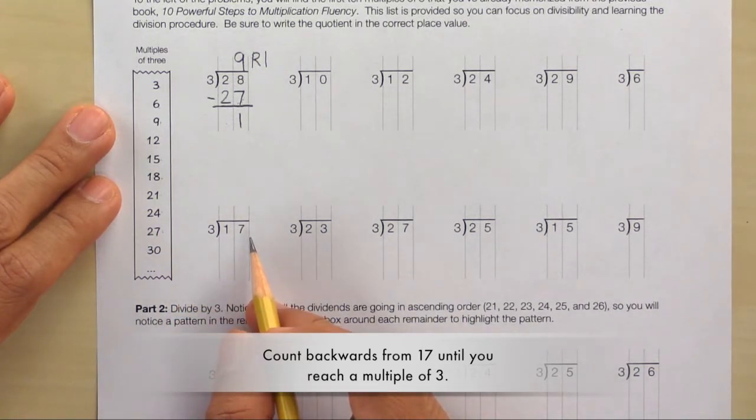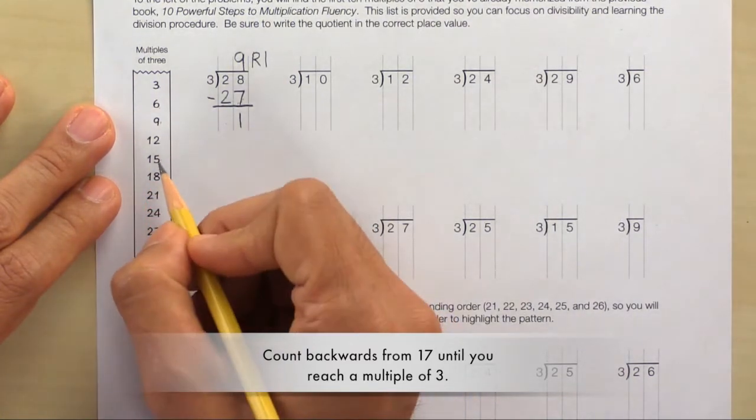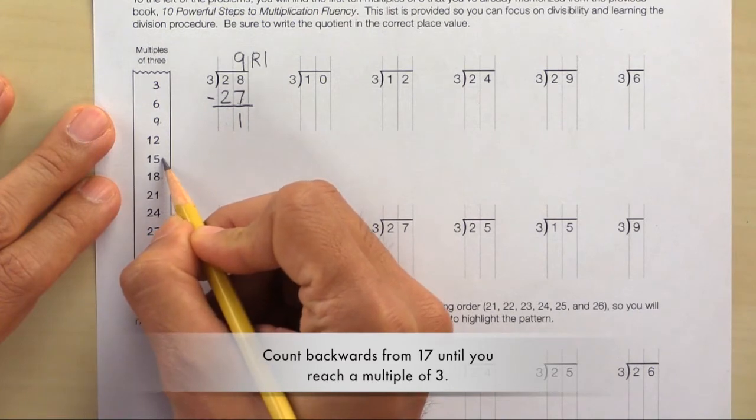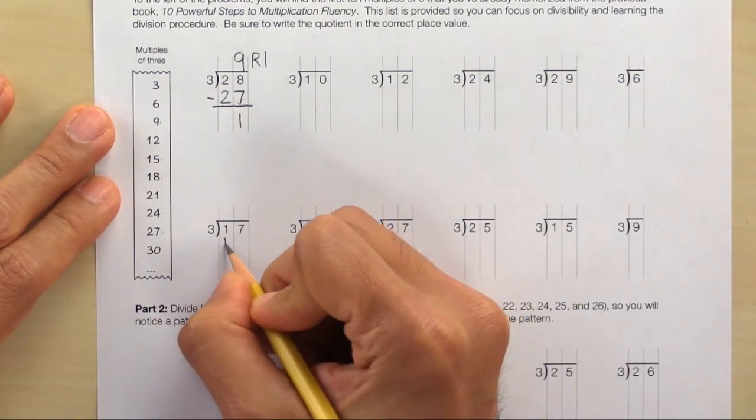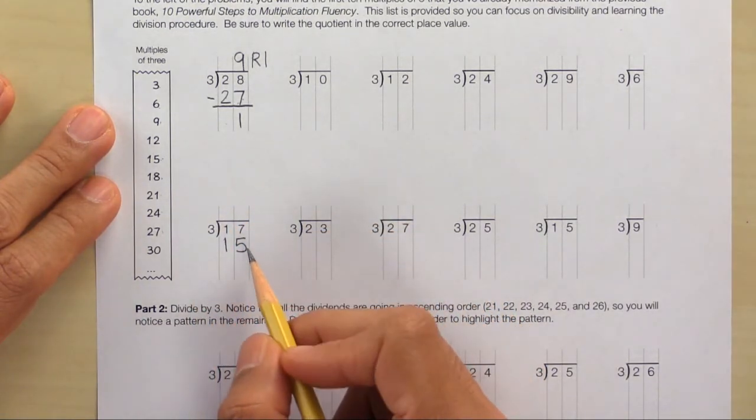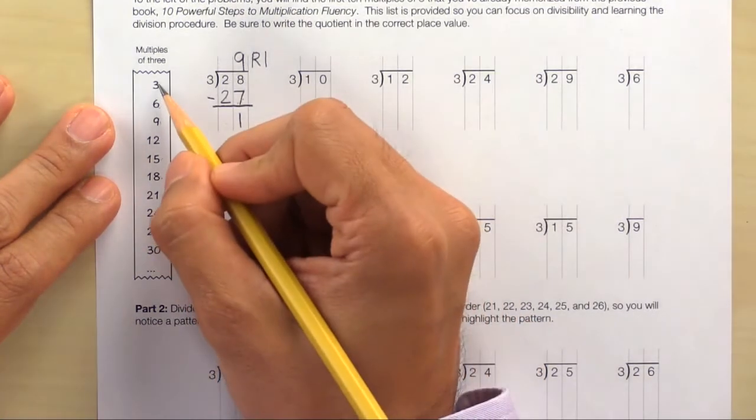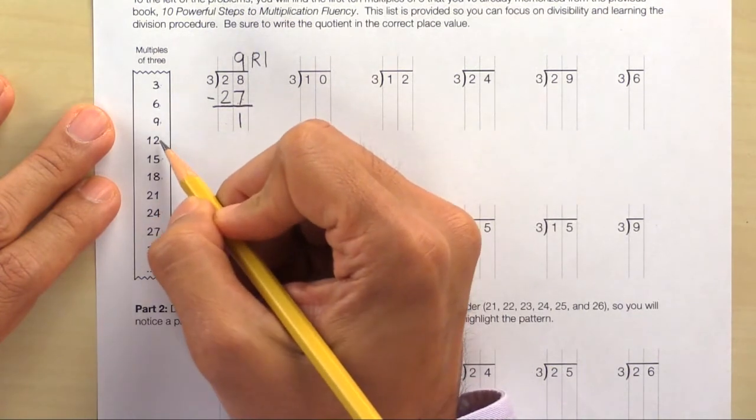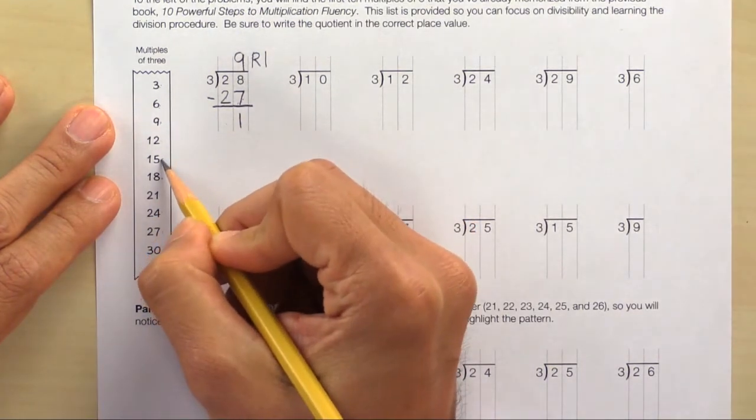Count backwards again and it takes us to 15. Is 15 on the list? The answer is yes, it's right here. So write it down right away. And how many times do we need to count by 3 to get to 15? 1 times, 2 times, 3 times, 4 times, 5 times.